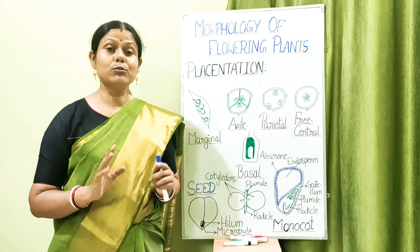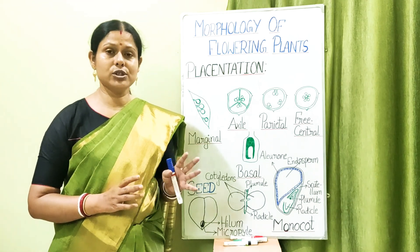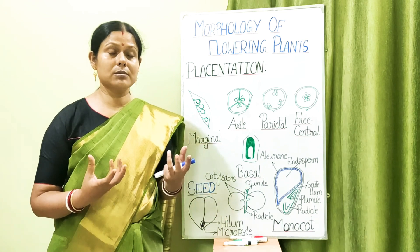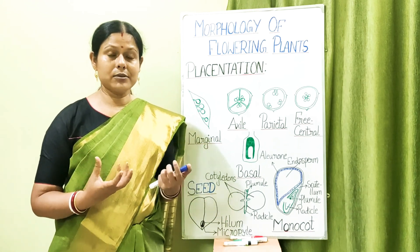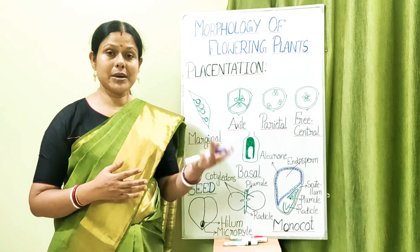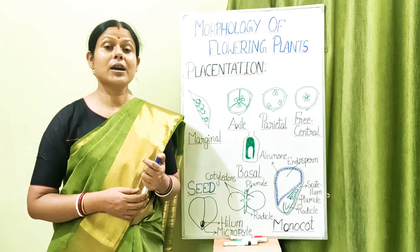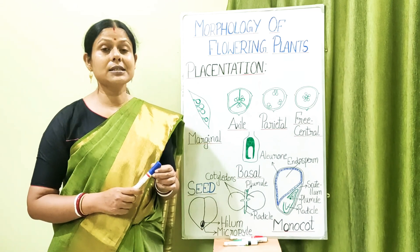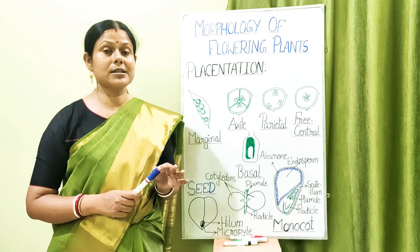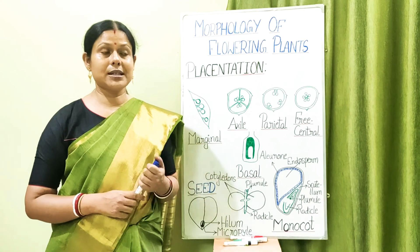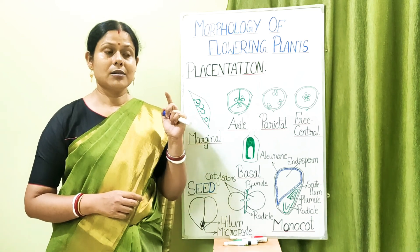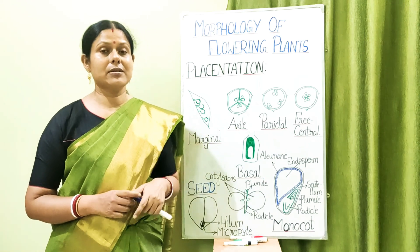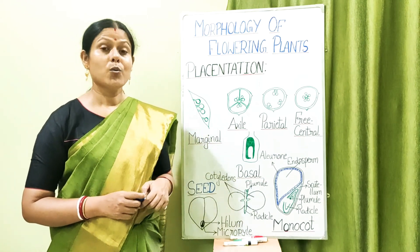Two more terms: monoecious and dioecious. Monoecious, also called hermaphrodite, means that in the same plant there are two different flowers — male and female — as in the case of pumpkin. Dioecious plants are those where the plants are separate, bearing male flowers on the male plant and female flowers on the female plant.